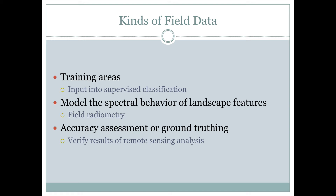When we're working with remote sensing, there might be several different kinds of field data that we want to consider. One would be the training areas. If we're doing a supervised classification and we want to use some training areas, we should know for sure what is in those training areas.